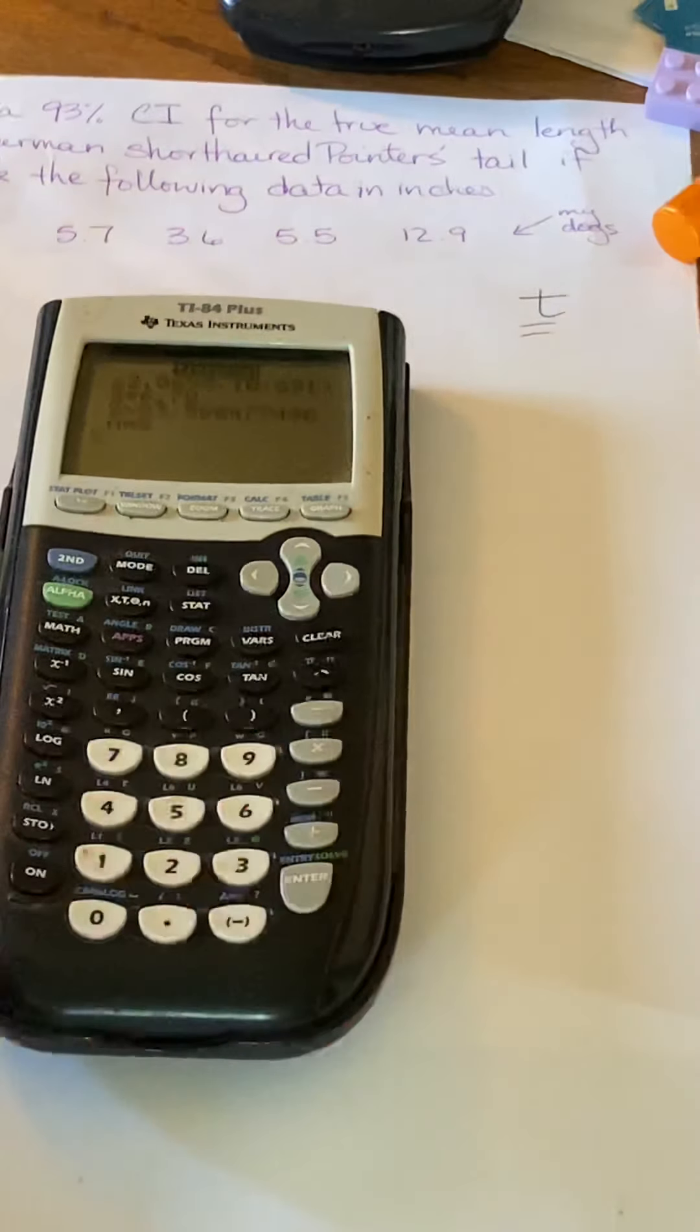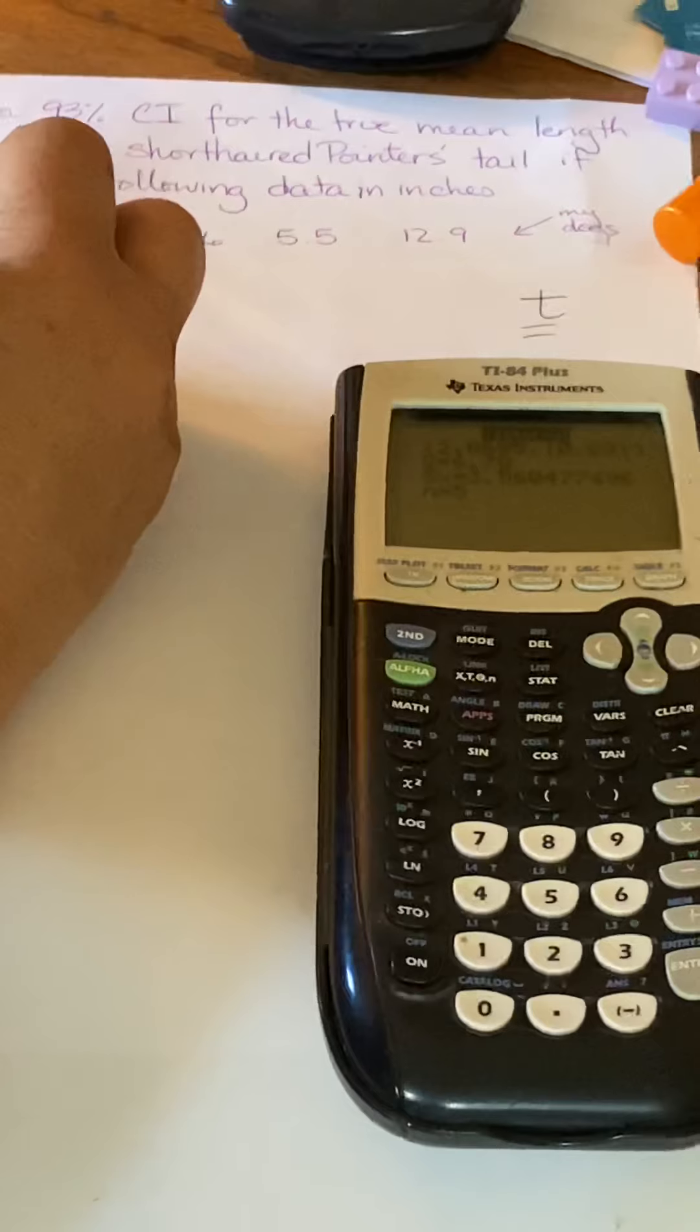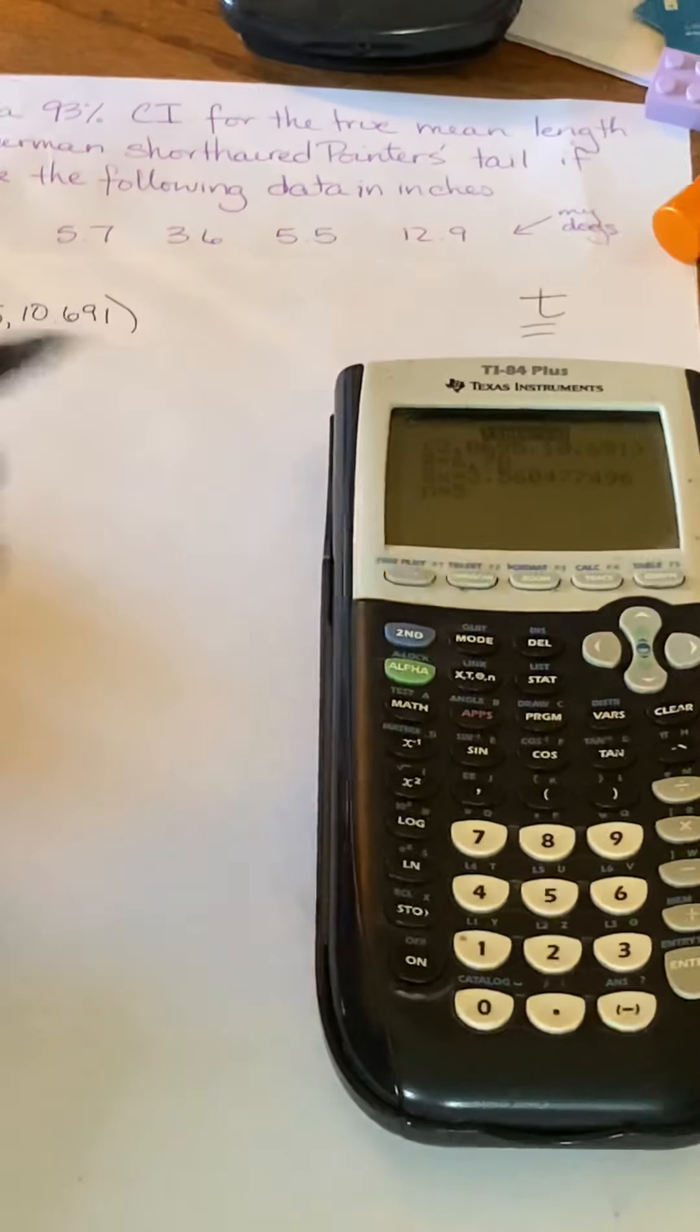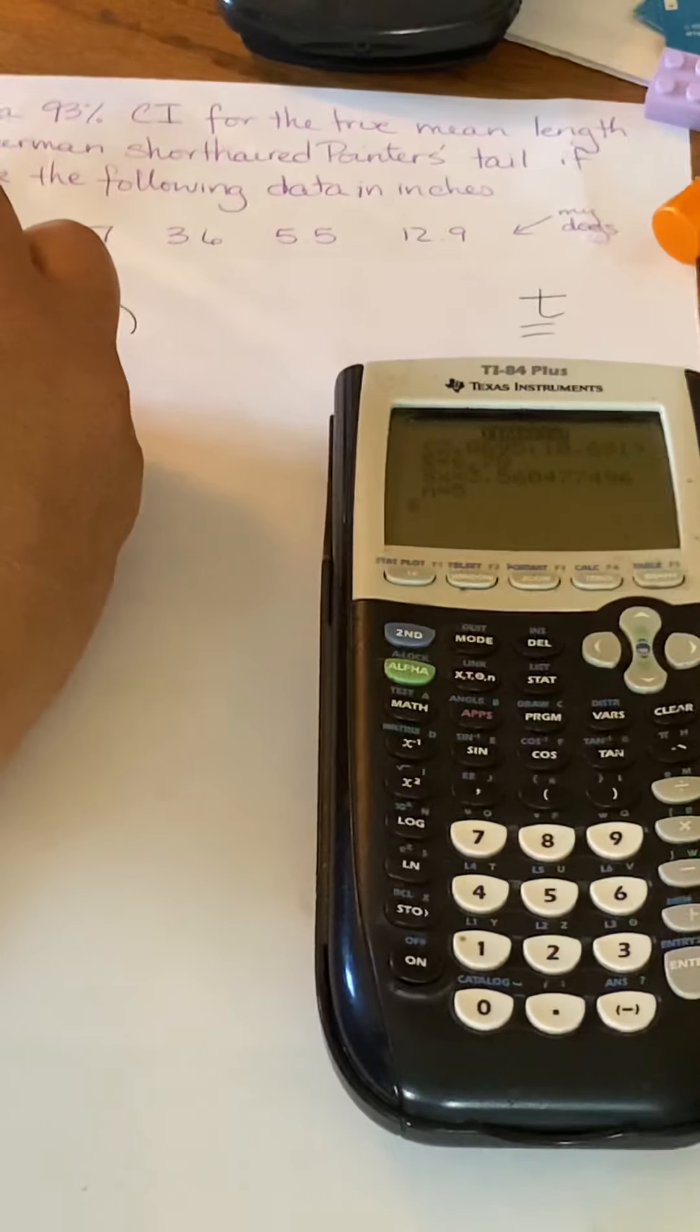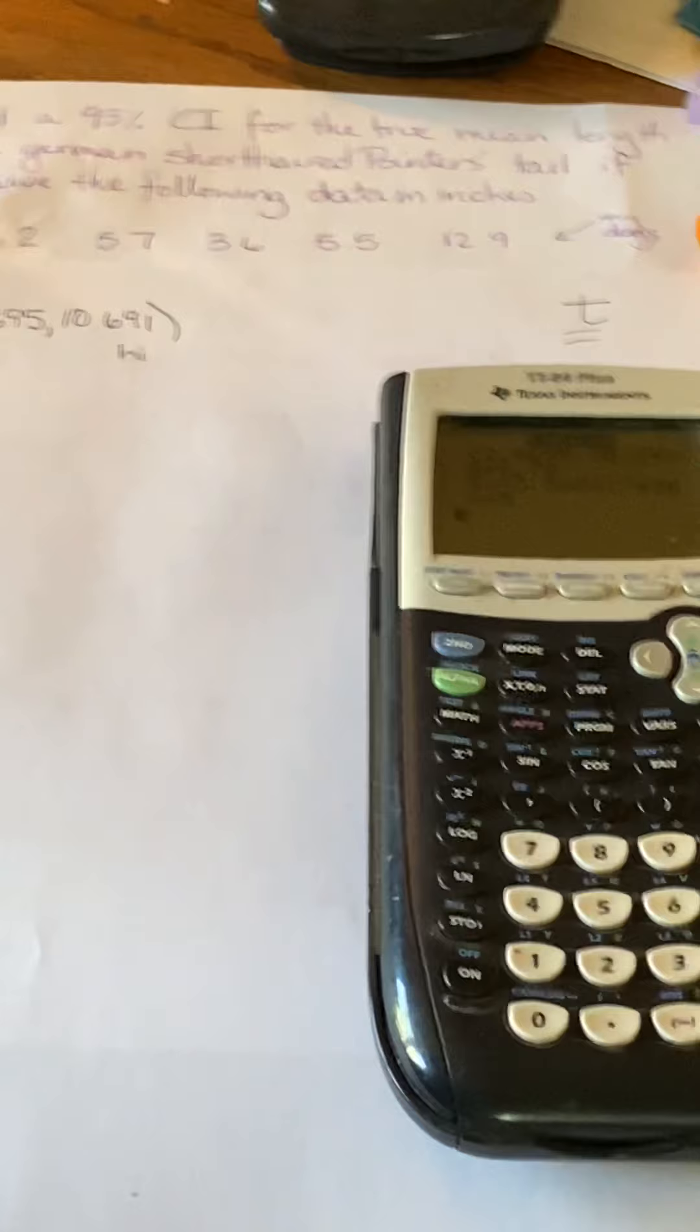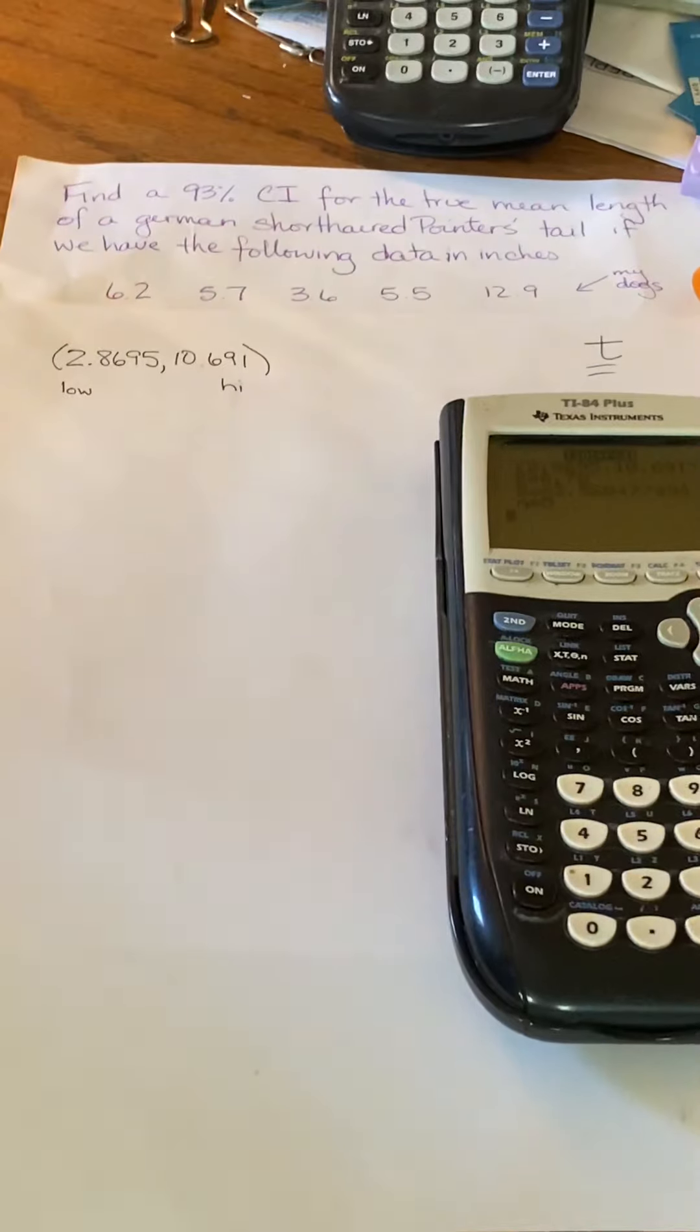So you end up getting these two numbers in parentheses there. Now, I am going to move that to the side over there so that I can write this down. So it says 2.8695 to 10.691. It also gives you the mean and the standard deviation and your sample size in case you need it. But right now, we're just interested in the interval. So this is the low boundary, and this is the high boundary. So we've got the low and the high. So we have the two endpoints.